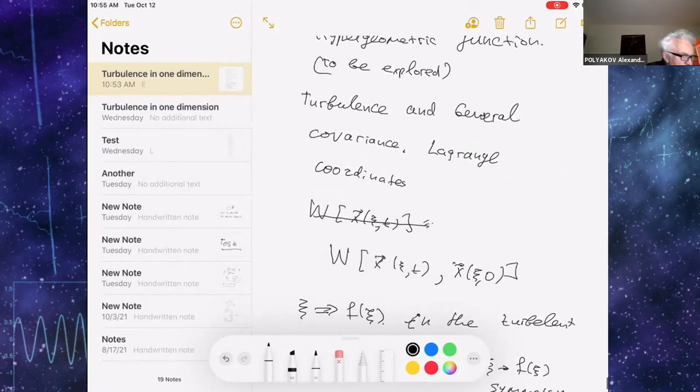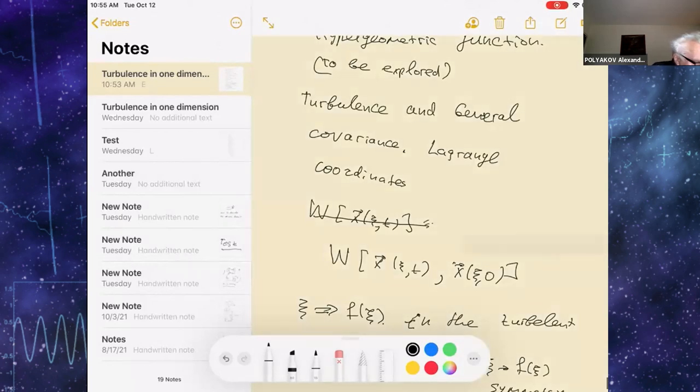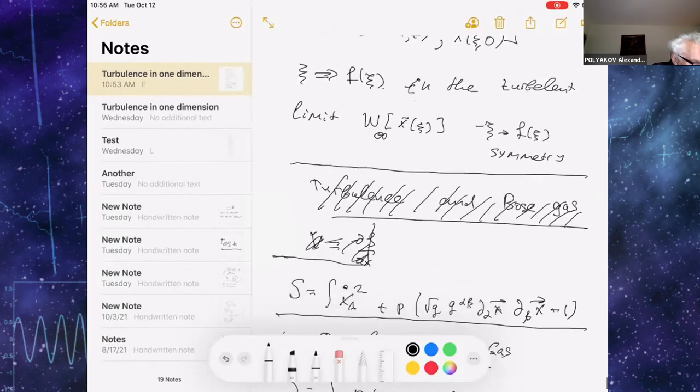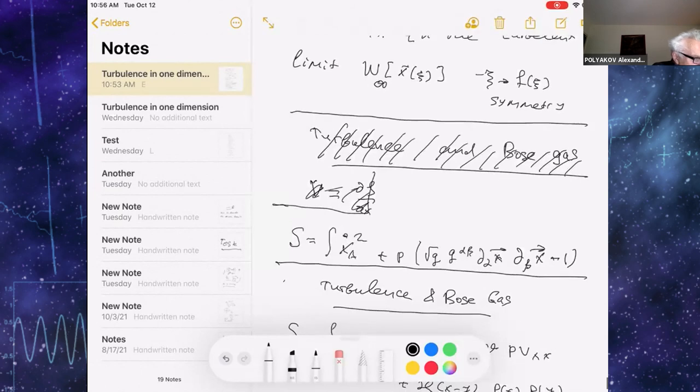Another thing, another concept which seems to be present in turbulence is general covariance. It appears when we describe the fluid in terms of Lagrange coordinates. And it is related to these master equations, but obviously I don't have time to discuss.